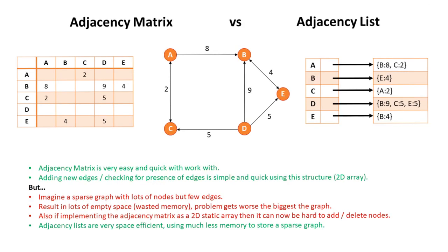One final thing for the exam is you have to understand the advantages and disadvantages of using an adjacency matrix as a method of representing a graph and an adjacency list. Well, this adjacency matrix is very easy and quick to work with. Adding new edges and checking for the presence of edges is really simple. We could construct this in a 2D array, which is a nice simple data structure.